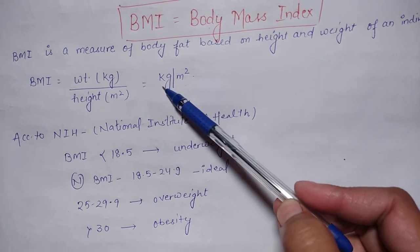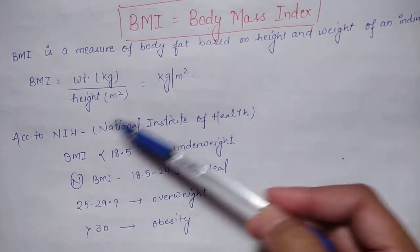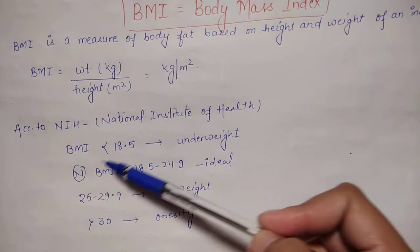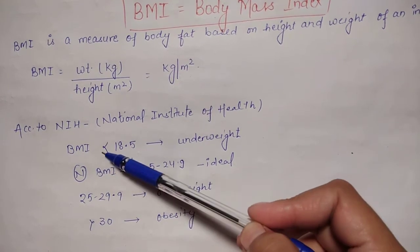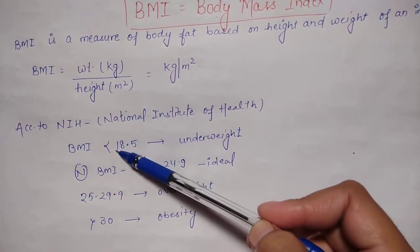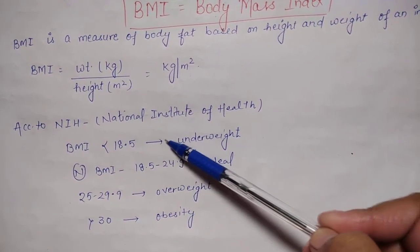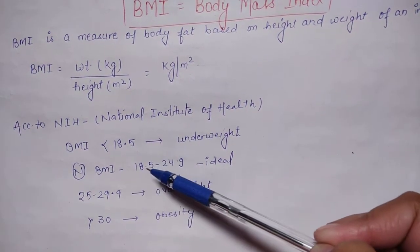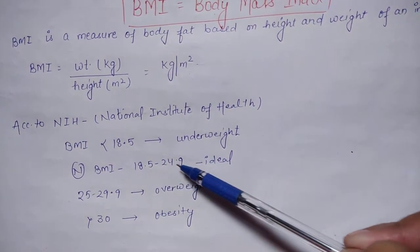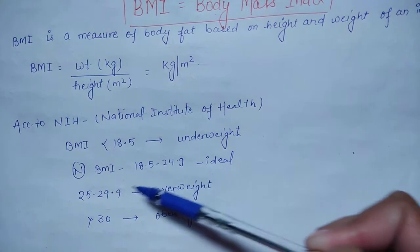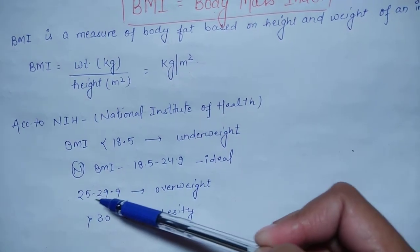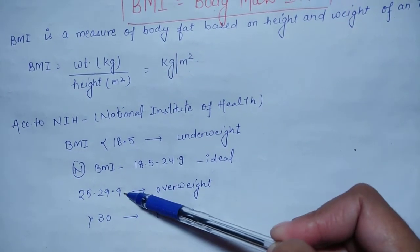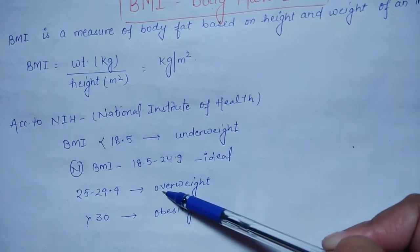According to the National Institute of Health, if BMI is less than 18.5, the person will be underweight. The normal BMI range is 18.5 to 24.9. A BMI between 25 to 29.9 represents overweight.